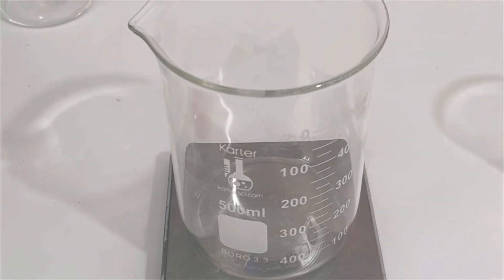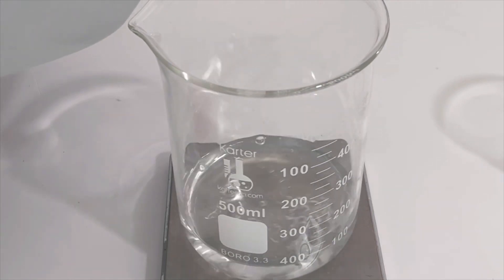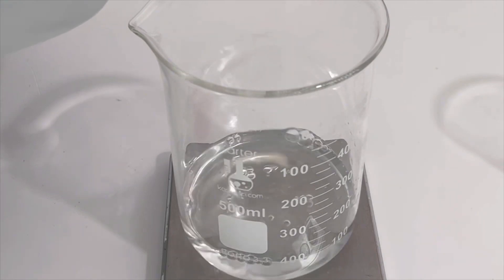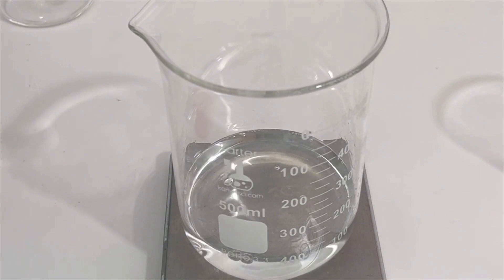Hi guys, today we'll be making a natural vaginal lubricant. So to begin, I will be adding my water to this beaker and then I will move on to adding our thickener. I'm using two thickeners today: xanthan gum and hydroxypropyl methylcellulose.